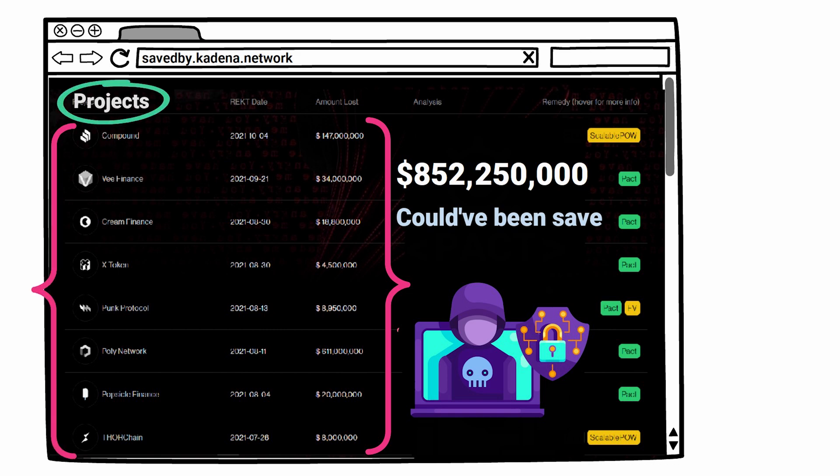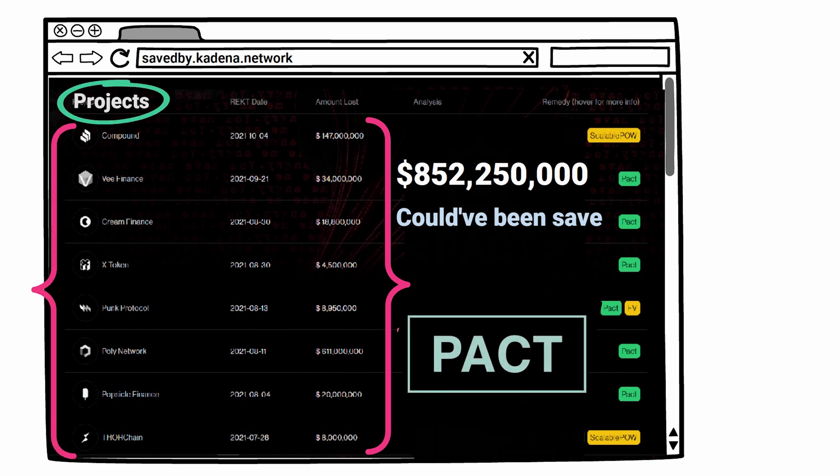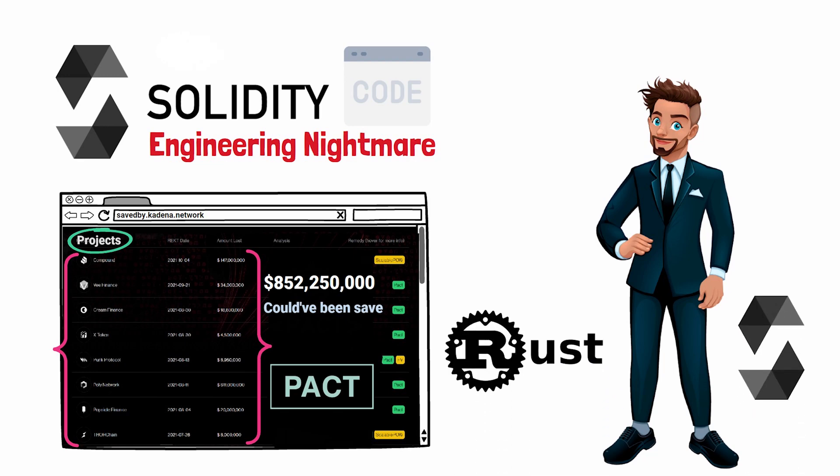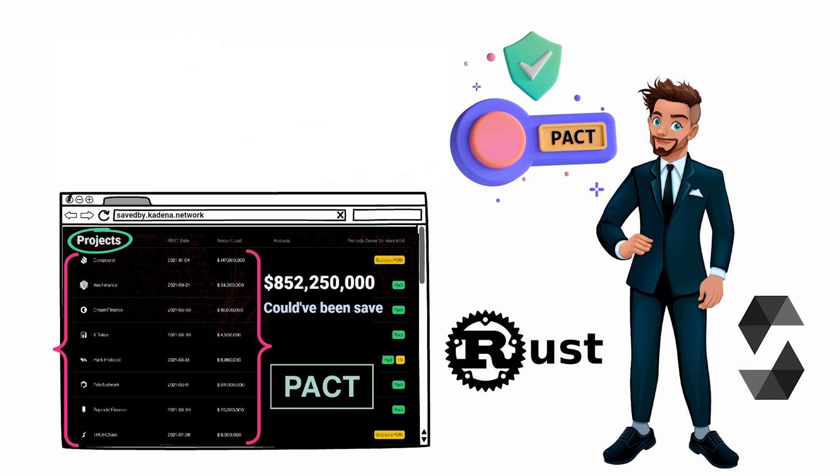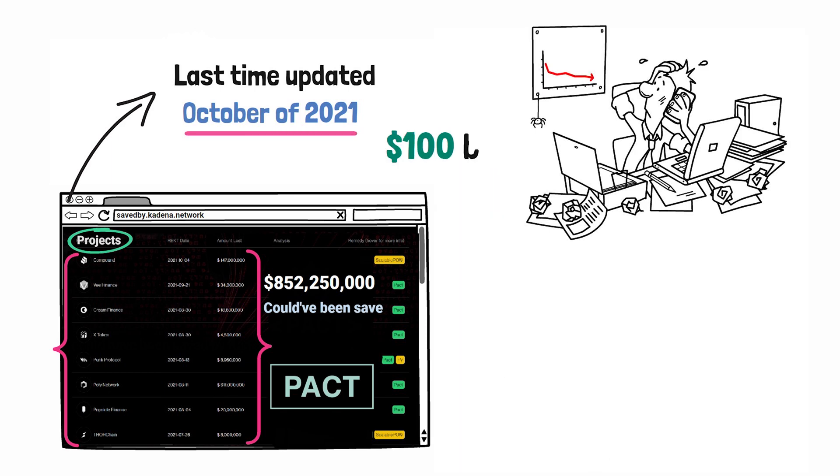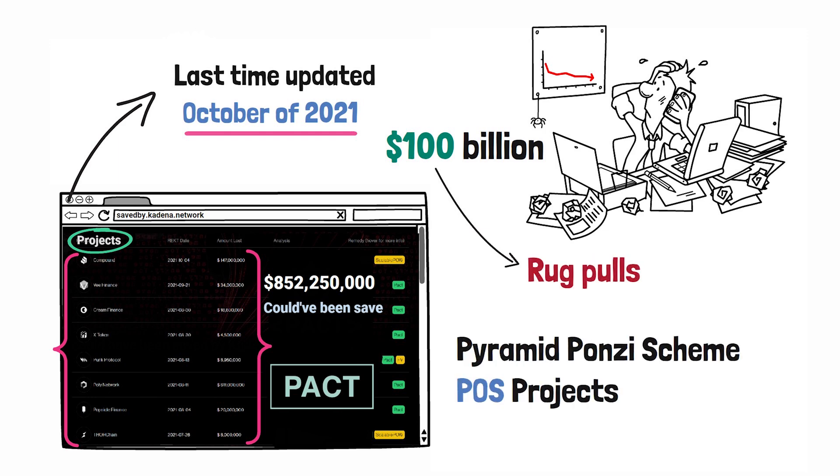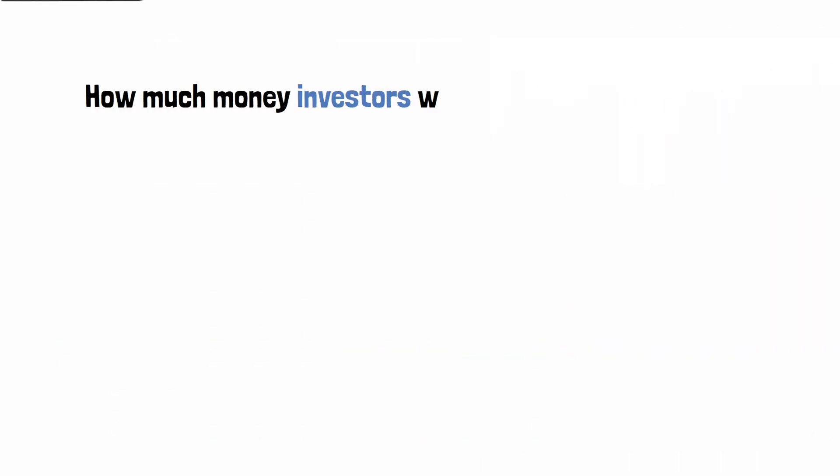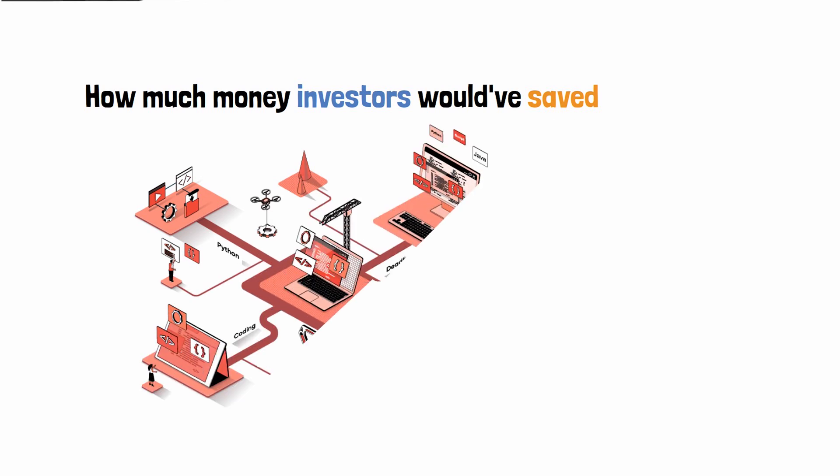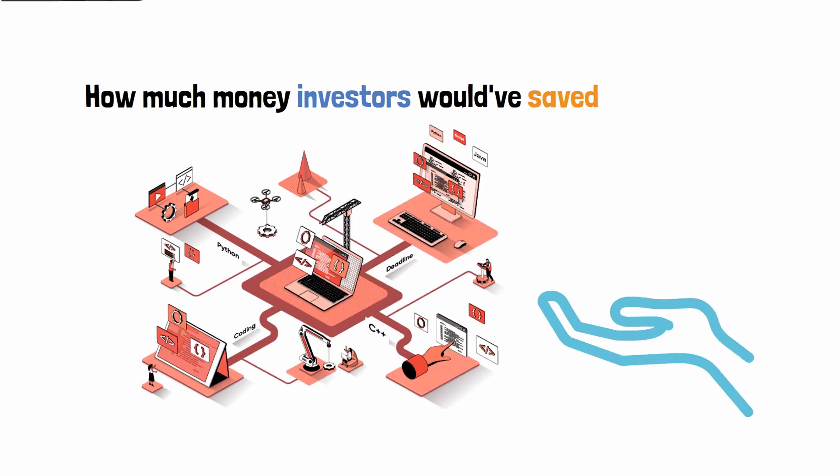In my opinion, coding languages like Rust and Solidity will never be anywhere near as safe as Pact. Now unfortunately, the last time this website was updated was back in October of 2021. Since then, crypto investors have lost over $100 billion because of hacks, scams, rug pulls, and pyramid Ponzi scheme proof-of-stake projects like Terra Luna and Time Wonderland. Just imagine how much money investors would have saved if every project in the crypto space would have been built with a coding language as safe as Pact.